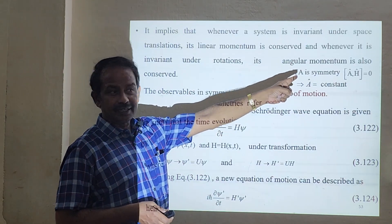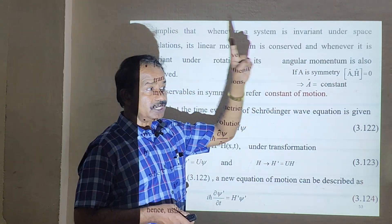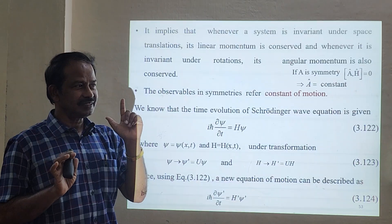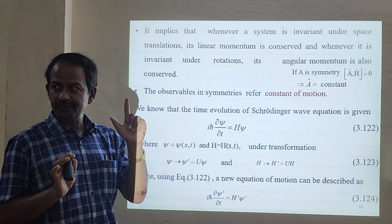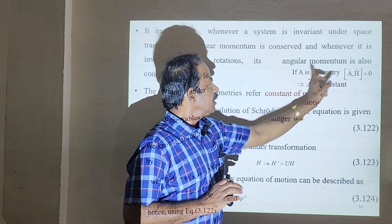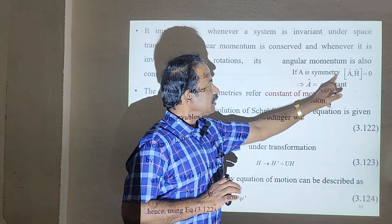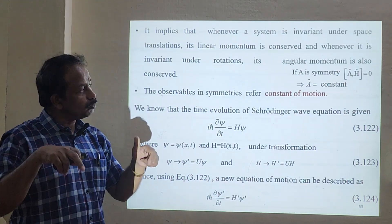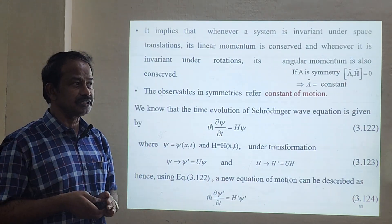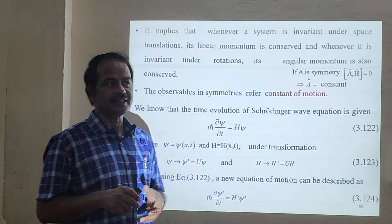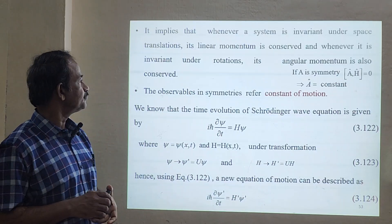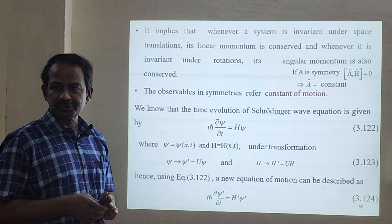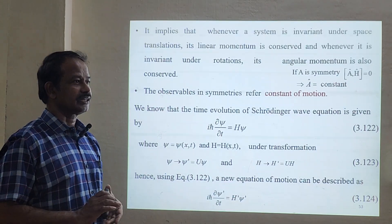If A is a symmetry, the Hamiltonian and wave function will always be invariant — as we discussed from the beginning. If A is a symmetry, then the commutator [A, H] = 0, meaning both commute with each other. This implies that A is a constant — the observables related to symmetries are constants of motion and conserved quantities.